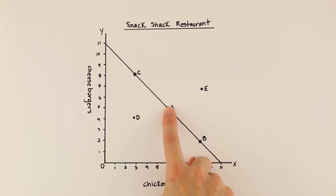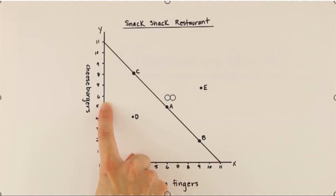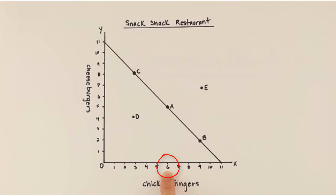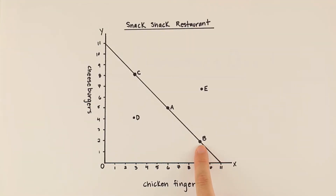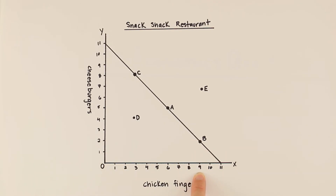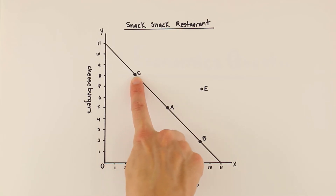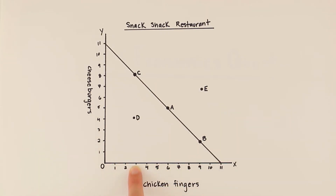This line, known as a curve, shows you the amount of each you can make at the same time. Pick a point on the line and trace your finger over to the y-axis — at this particular point the restaurant can cook five cheeseburgers, and also six orders of chicken fingers. If we move further down the curve to point B, only two cheeseburgers can be prepared if the restaurant needs to cook nine orders of chicken fingers. Similarly, at point C, the restaurant can prepare eight cheeseburgers but only three orders of chicken fingers.